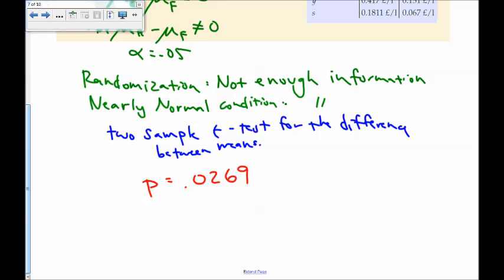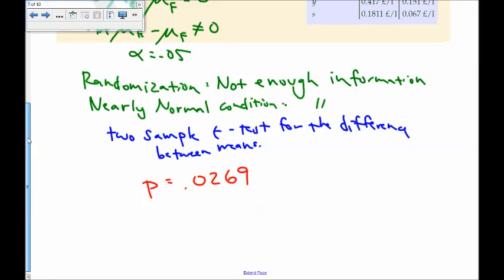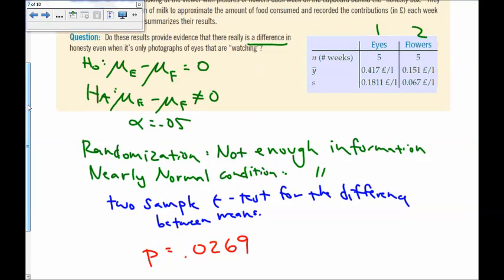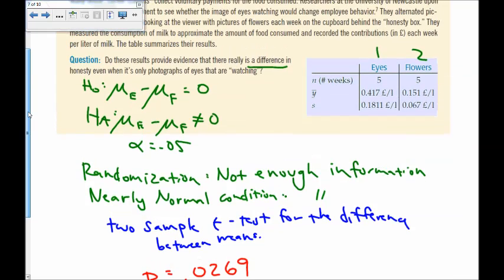With a p-value of 0.0269, which is less than alpha, I reject the null hypothesis and conclude that there is a difference in honesty when it's only photographs of eyes that are watching.